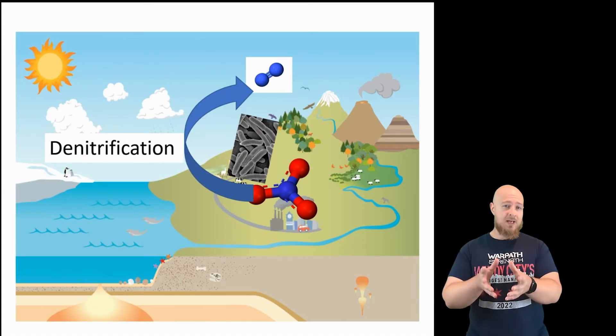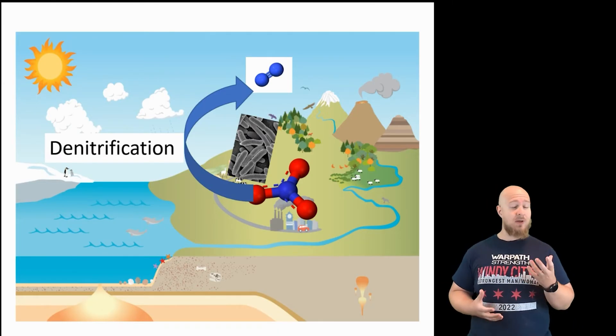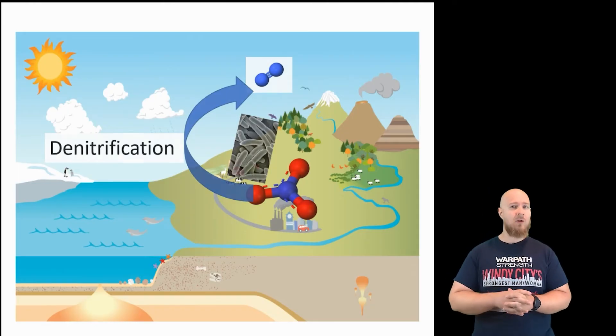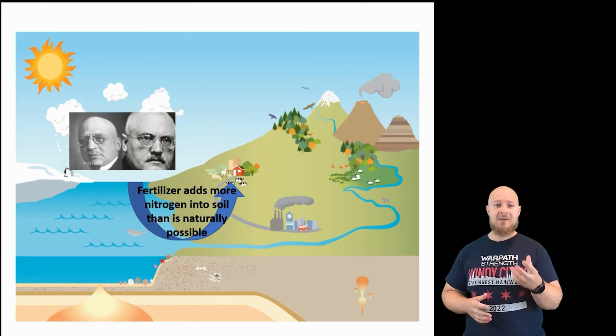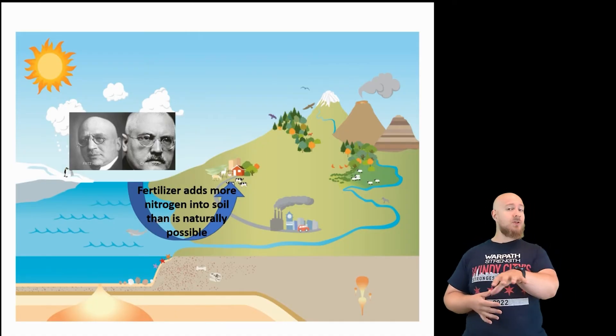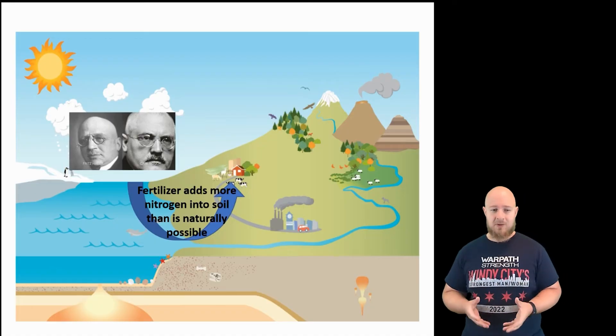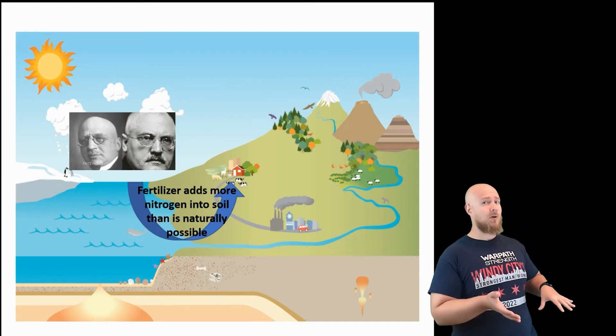Now, much like how our use of fossil fuels has disrupted the carbon cycling on the planet, humans have disrupted the nitrogen cycle as well. We use a process called the Haber-Bosch process in which we synthetically make ammonia that becomes part of our fertilizers. And through the use of fertilizer, we artificially increase the amount of nitrogen that ends up getting assimilated by plants, but we're going to get more into the consequences of that in the unit on agriculture.